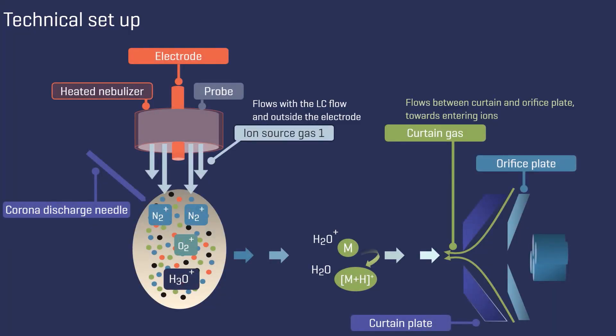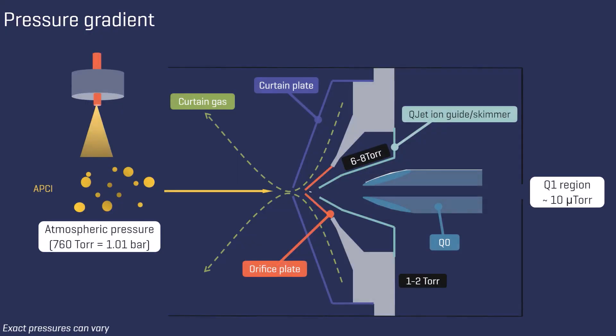This schematic illustrates the technical setup of APCI sources, which enables the chemical ionization process. The transfer of the LC flow into the gas phase is aided by the heat and a gas flow in the heated nebulizer. As within the ESI ion source setup, ions undergo a pressure gradient as they travel from ionization at atmospheric pressure to their entry into the mass analyzer.